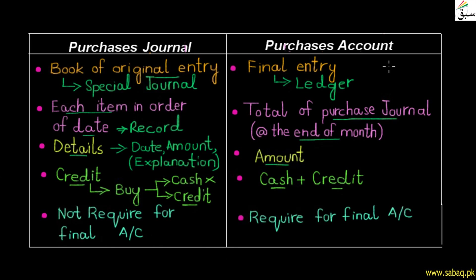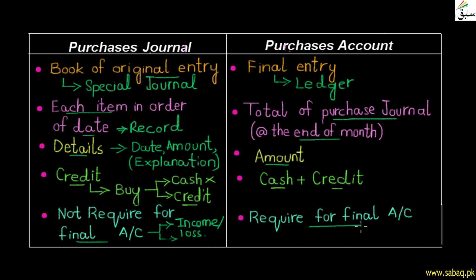The final difference concerns final accounts. The purchases journal is not required for preparing final accounts. Final accounts show the final results of business transactions — business income or business loss. The purchases journal is not used at this stage. The purchases account, however, is a ledger account, and its balance is used when preparing final accounts.